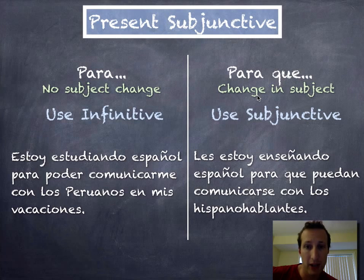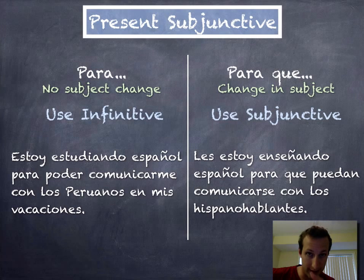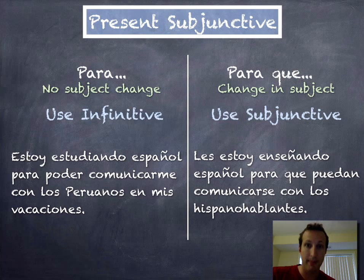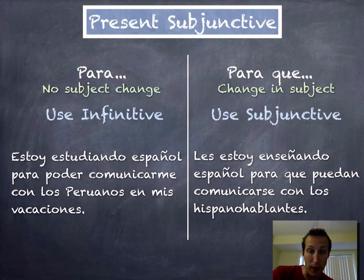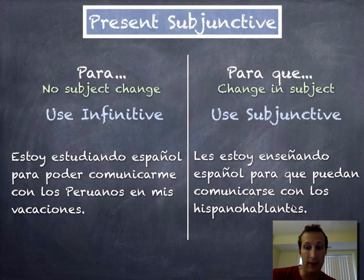'Para que' is when there's a change in subject. Let's take a look at this example: 'Yo les estoy enseñando a ustedes español para que puedan comunicarse con los hispanohablantes.' This time it's me teaching you so that you can communicate. I was the subject at the beginning, and 'you all' is the subject of the second part of that sentence. Anytime it's the same subject, it's 'para'; if it's a change in subject, it's 'para que' and we have to use the subjunctive. 'Puedan' here — the -AN ending on an -ER verb 'poder' is subjunctive.